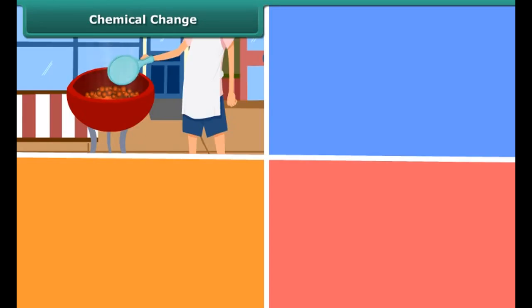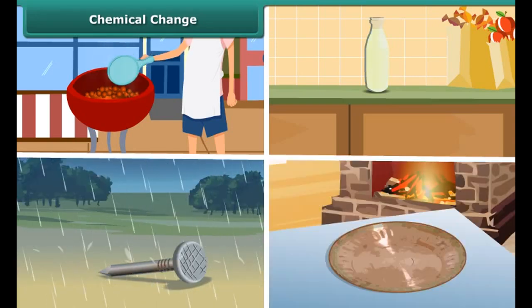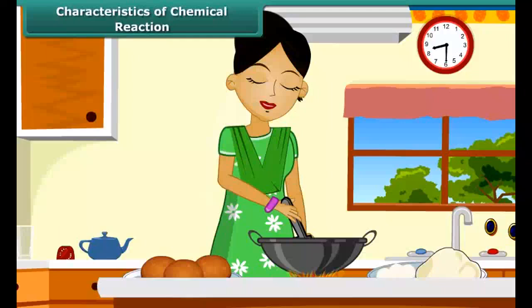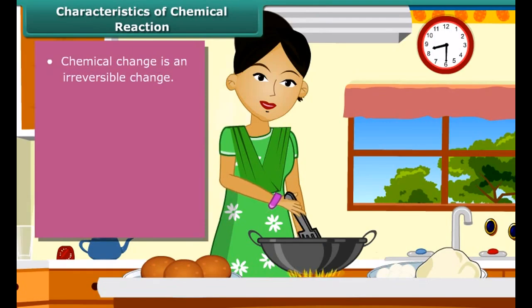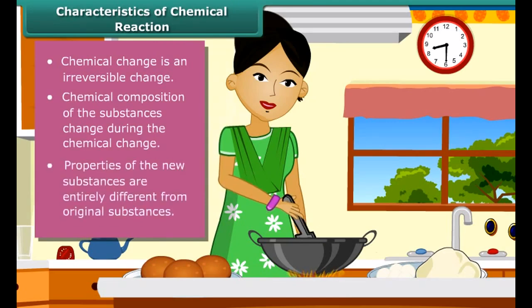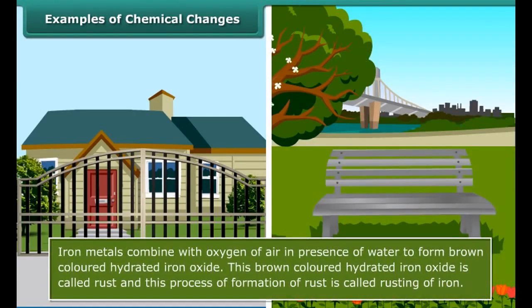Chemical changes include burning of coal, spoilage of milk, rusting of iron, and formation of green film on copper. A substance undergoes a chemical reaction during a chemical change. You must have seen your mother making puris from the dough of wheat flour. Can you get back the dough from the puri? No — this chemical change cannot be reversed by physical means.